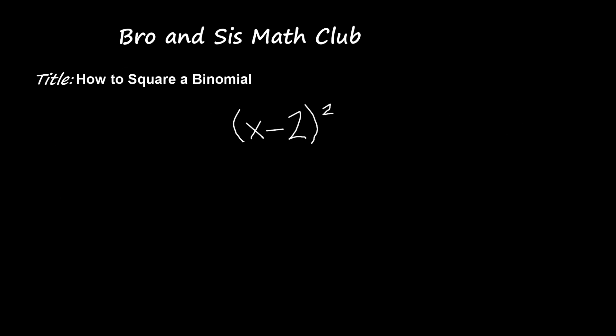One common mistake that people make is that you're not supposed to square a binomial like this: x squared minus 2 squared. So this is not how you would square a binomial.